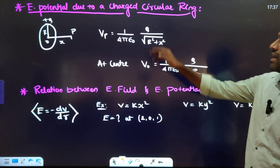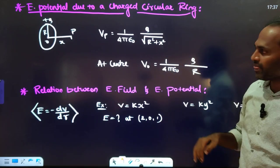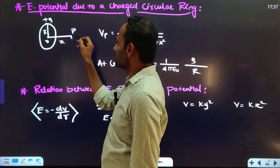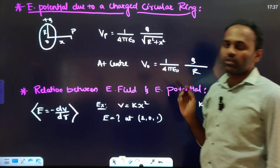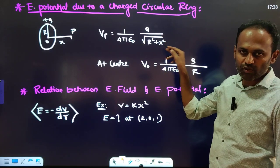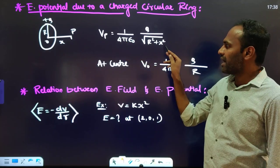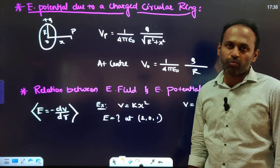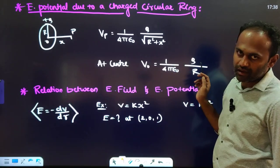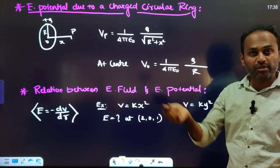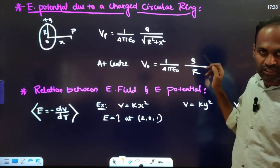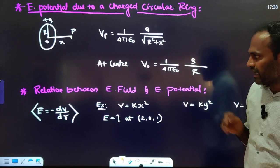Electric potential due to a charged circular ring: for a ring with charge Q, radius R, and axial point at distance x from the center, the potential at that point is V = (1/4πε₀) × Q / √(R² + x²). At the center of the ring, x = 0, so potential = (1/4πε₀) × Q/R. Note: at the center, electric field is 0 but potential is not.